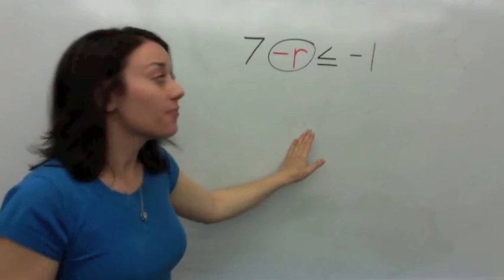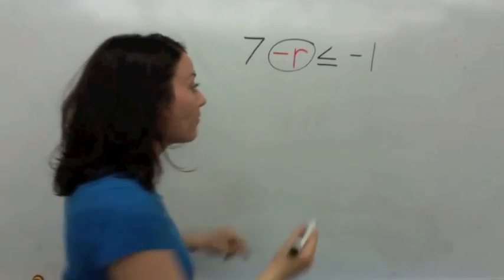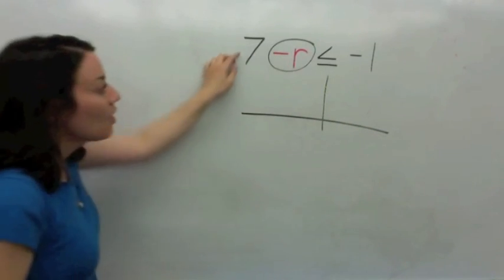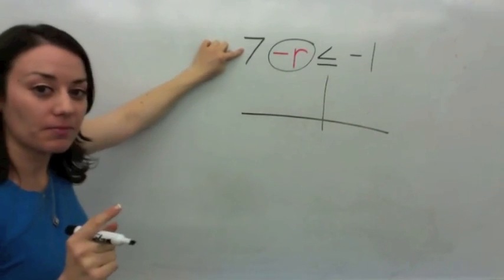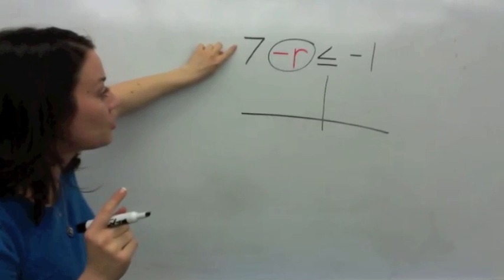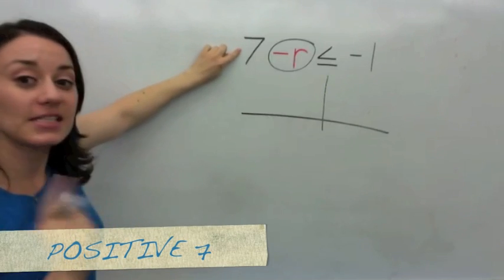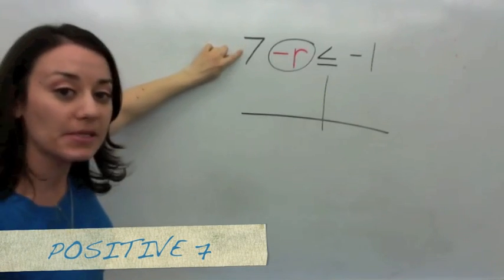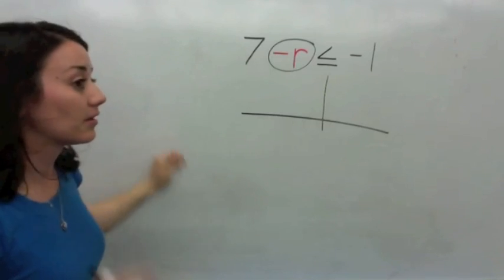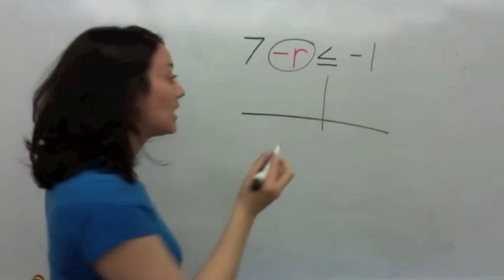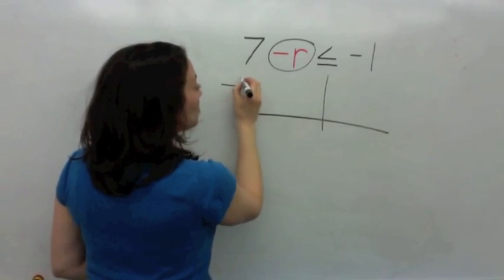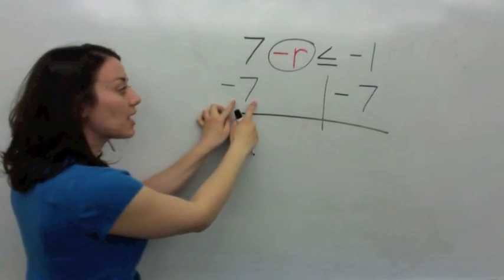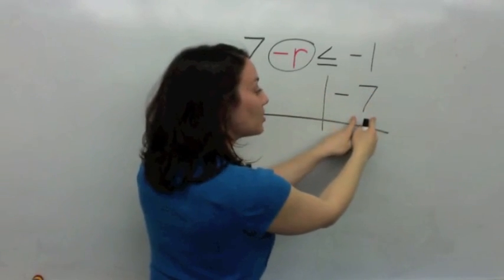Now that you've circled the negative, you can make a T-bone setup. Remember that this 7, because there is nothing next to it, it is actually a positive 7. So what is the opposite of positive 7? Negative 7. Very good. So subtract 7 from both sides. Remember, what you do to one side, you have to do the same thing to the other.